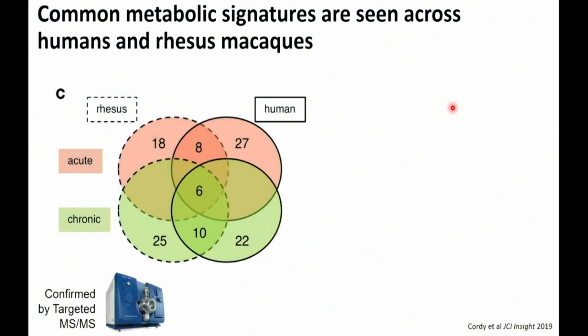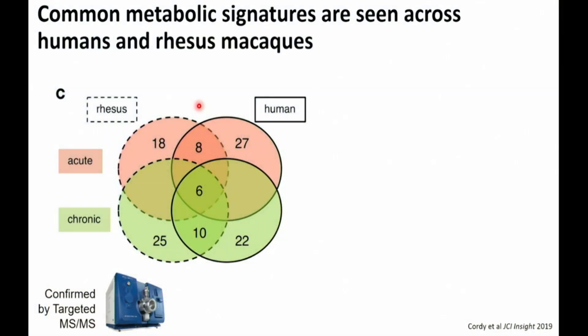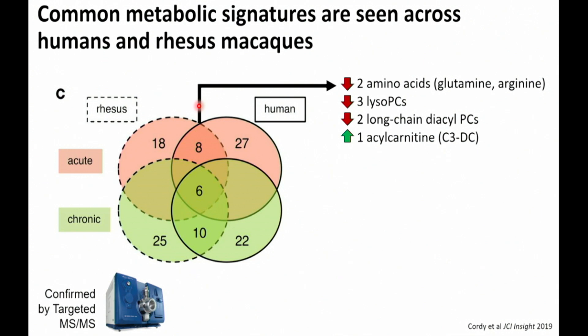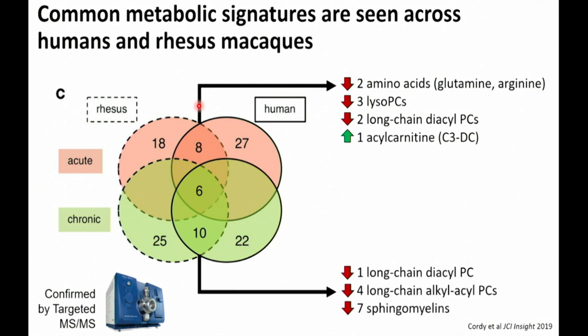We then wanted to pull these datasets together — the human cross-sectional studies with real falciparum and the more controlled longitudinal studies of codinei in rhesus macaques — to find a robust signature of the acute and chronic phase. We found eight metabolites with reference-compound-confirmed hits that changed in the same direction in both studies: two amino acids — glutamine and arginine — multiple lysophosphatidylcholines, multiple long-chain diacyl PCs, and an increase in one acylcarnitine. Most of these were depletions except for the acylcarnitine. In the chronic phase, we saw depletions in different diacyl PCs and a reduction in multiple sphingomyelins, also seen commonly across both studies.